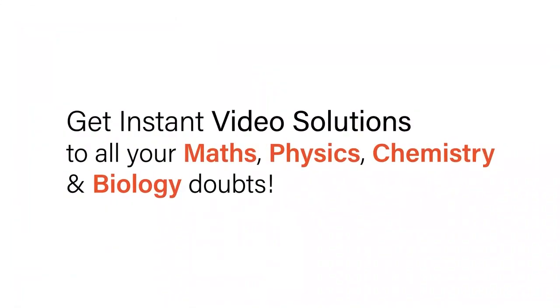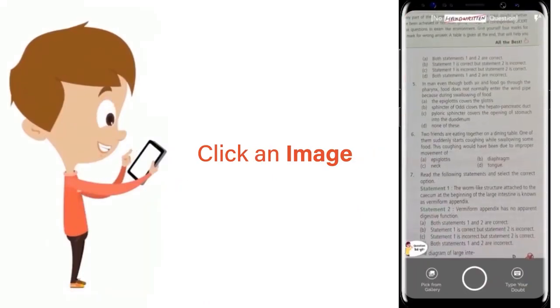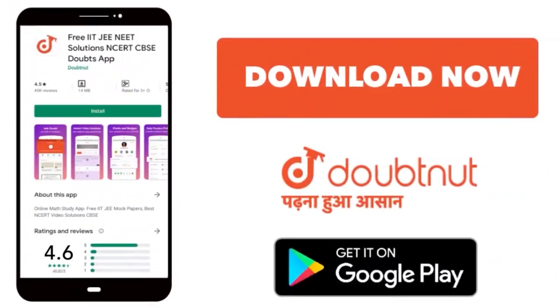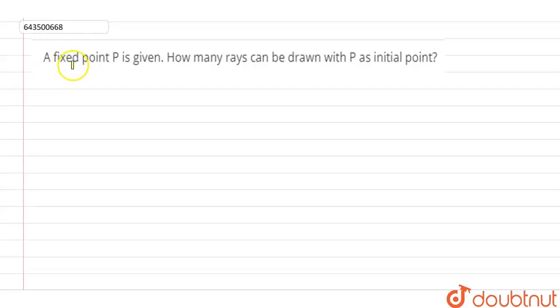With Doubtnet, get instant video solutions to all your maths, physics, chemistry, and biology doubts. Just click the image of the question, crop it, and get an instant video solution. A fixed point P is given. How many rays can be drawn with P as the initial point? They're asking us to find out from a fixed point how many rays can be drawn.